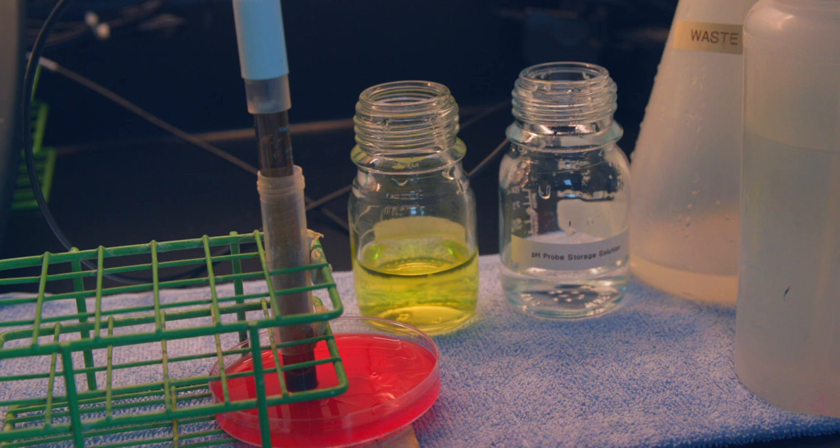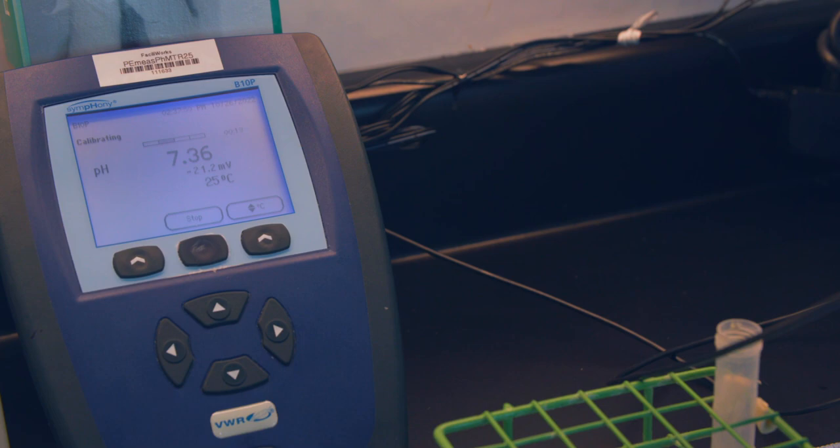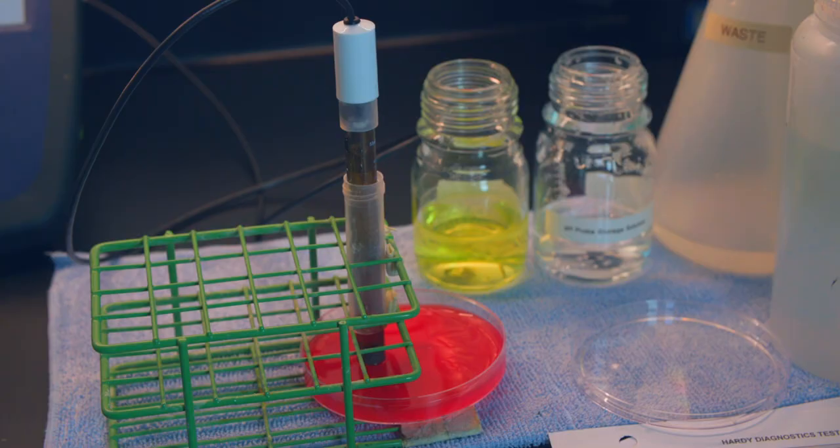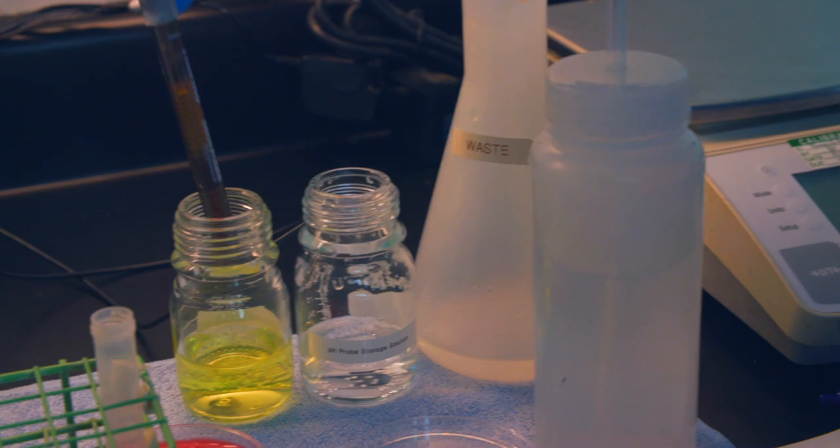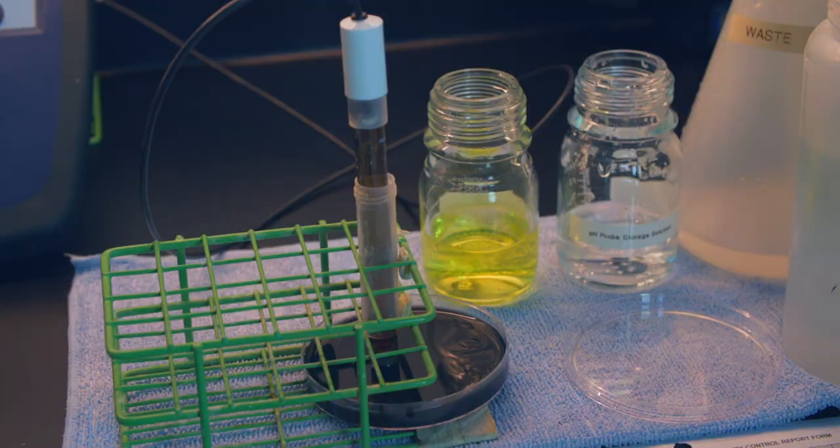Press read on your instrument and wait until the screen says stable. Record your pH and temperature. Remove the probe from the media and rinse with deionized water over a waste beaker. Repeat this process for any additional readings. Be sure to use a flat pH probe that will fully contact the media.